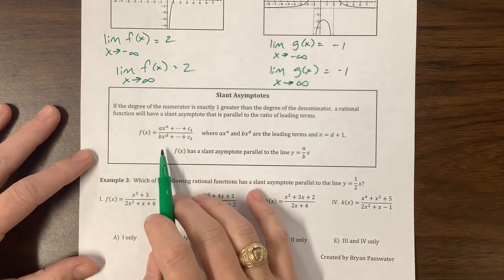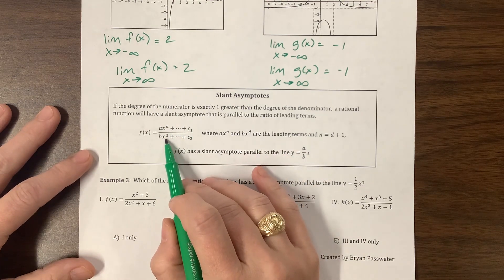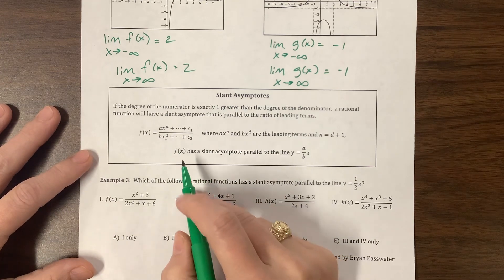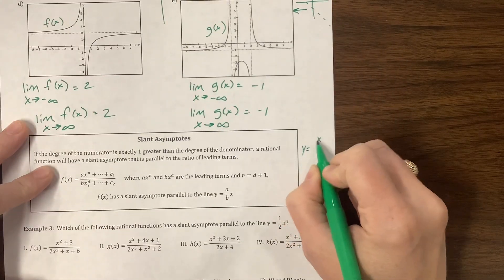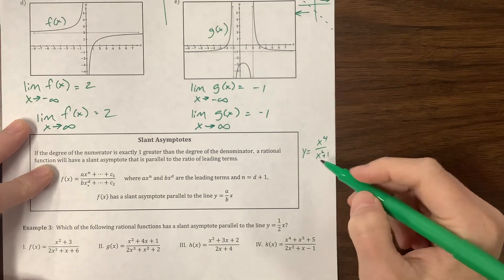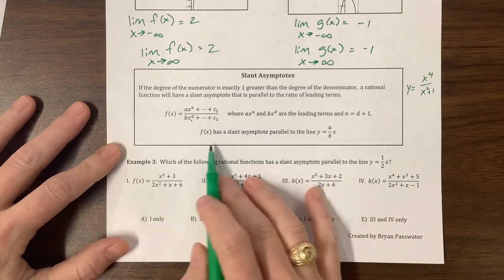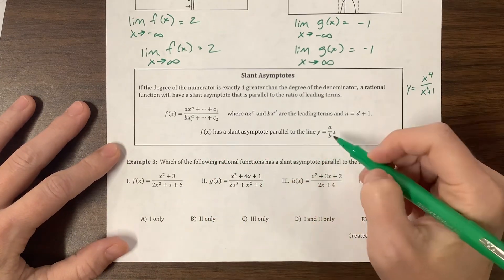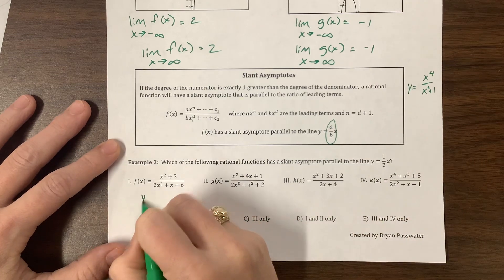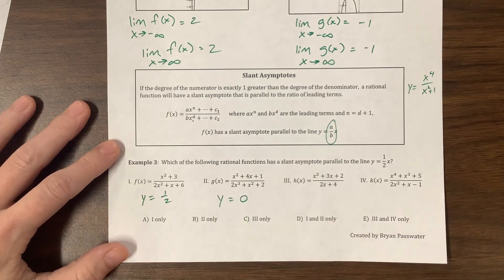When the degree of the numerator is one unit bigger than the degree of the denominator, we divide it out and get a linear asymptote — a slant asymptote. If the numerator is bigger by two, like x to the fourth over x squared plus 1, when you divide it out you get a parabolic asymptote, which is cool but AP probably won't cover that. This one is the same degree — asymptote y equals 1/2, no slant. This one is bottom-heavy — y equals 0, no slant.